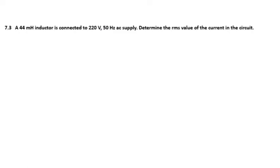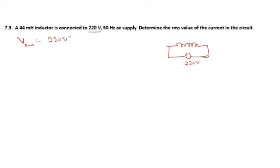Question 3: a 44 mH inductor is connected to 220 volt, 50 hertz AC supply. Determine the RMS value of current. The given values are always RMS, so V_RMS = 220 volt, L = 44 × 10⁻³ henry, and frequency = 50 hertz.